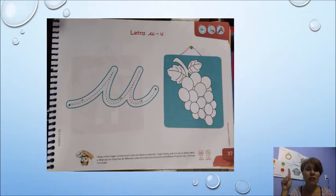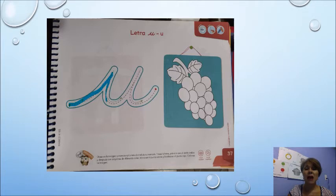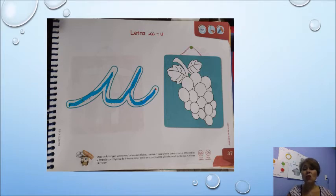Ya que hice mi trazo con mi dedo índice, ahora voy a elegir cinco colores diferentes y los voy a trazar empezando del punto verde al punto rojo, siguiendo la dirección de la flecha. Empiezo del punto verde, voy hacia arriba, bajo por la misma línea, hago la curva, subo, bajo por la misma línea, hago otra curvita y termino en el punto rojo. Ya que terminé de utilizar mis cinco colores en la vocal U, ahora voy a colorear mis uvas.